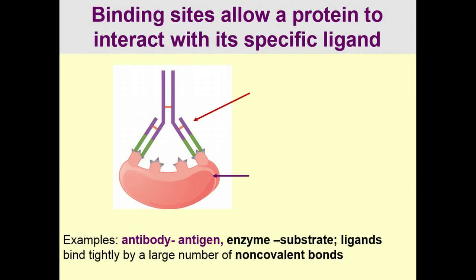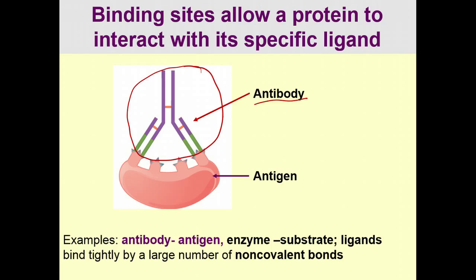These special 3D-shaped binding sites allow proteins to interact with a specific ligand. A ligand is any molecule that another molecule binds to. An antibody is a Y-shaped protein with a specific shape at its ends that recognizes only a very specific antigen. This specificity is entirely based on the 3D shape of the protein.